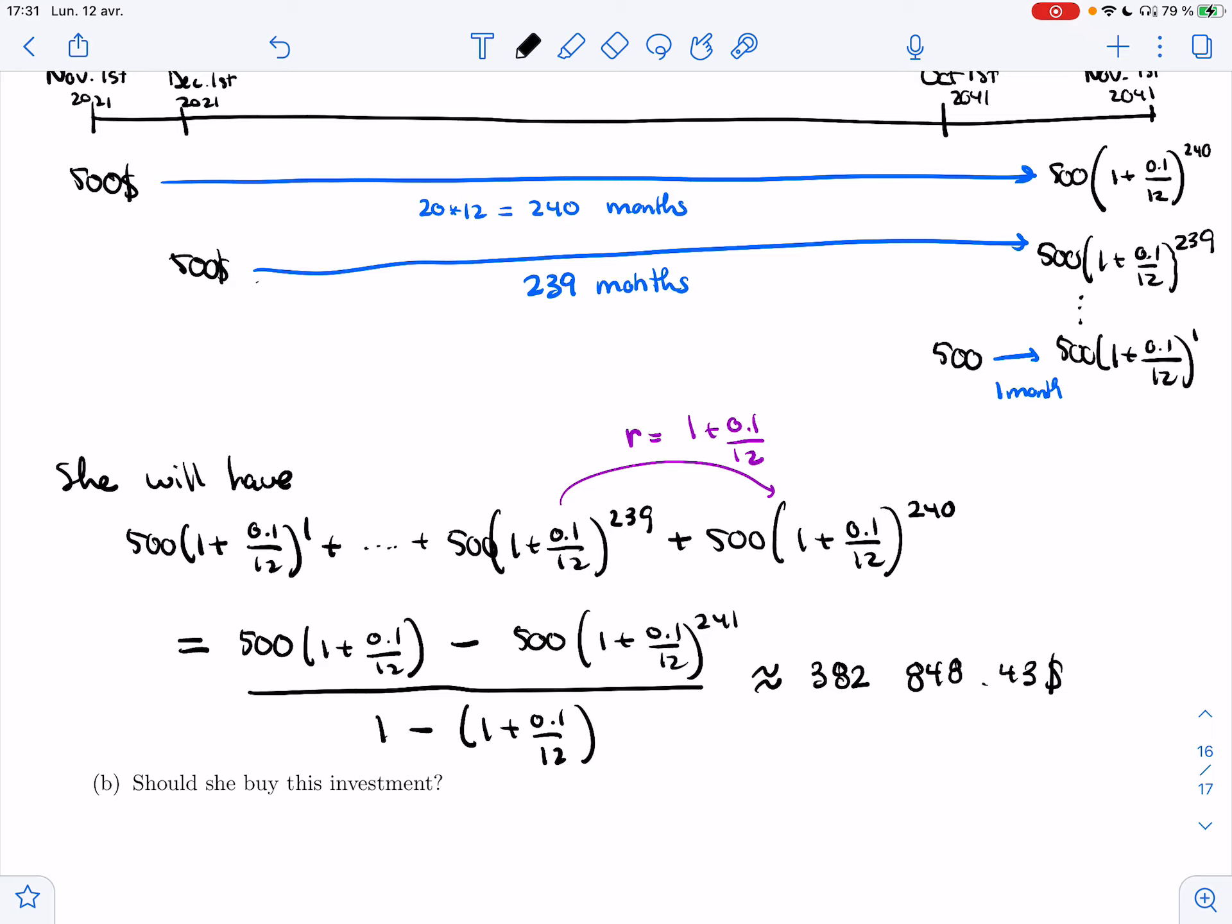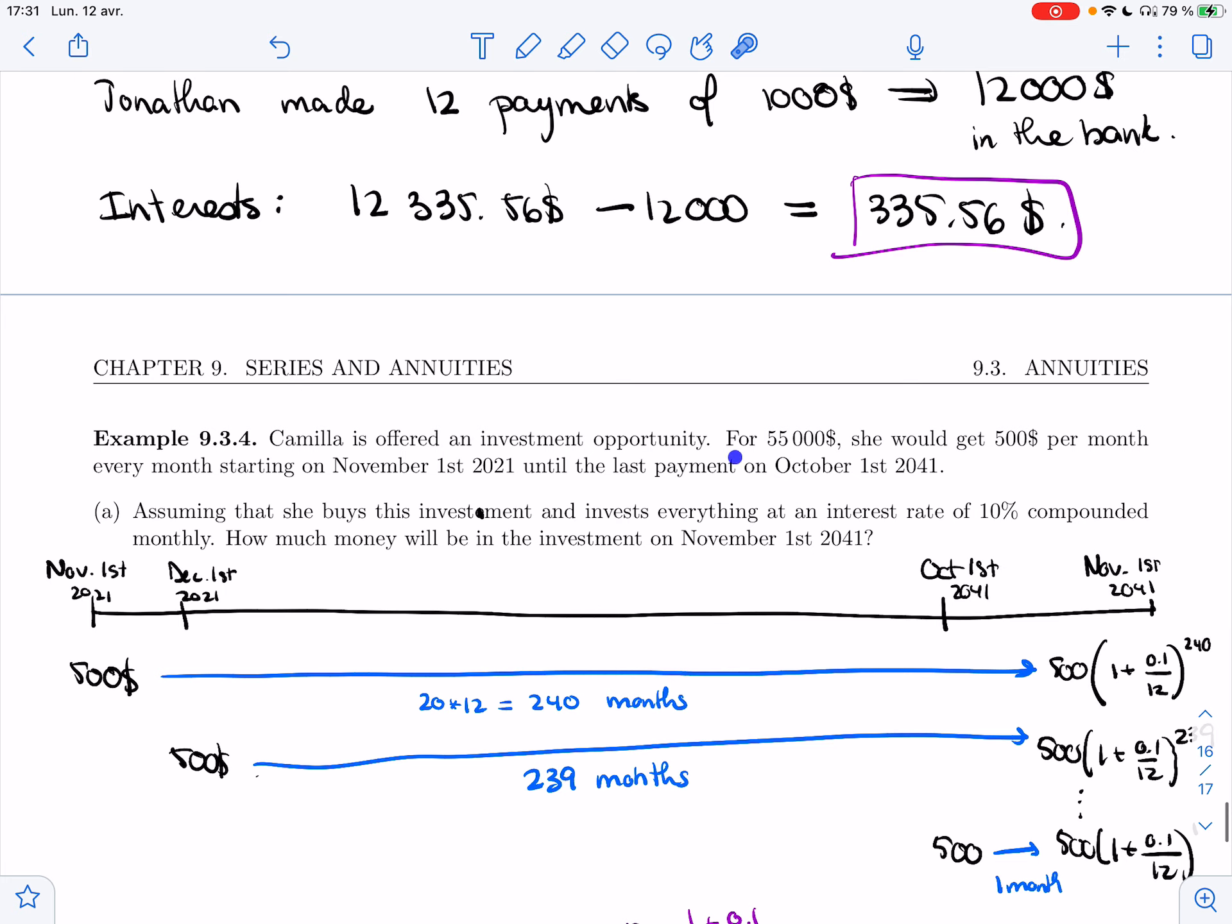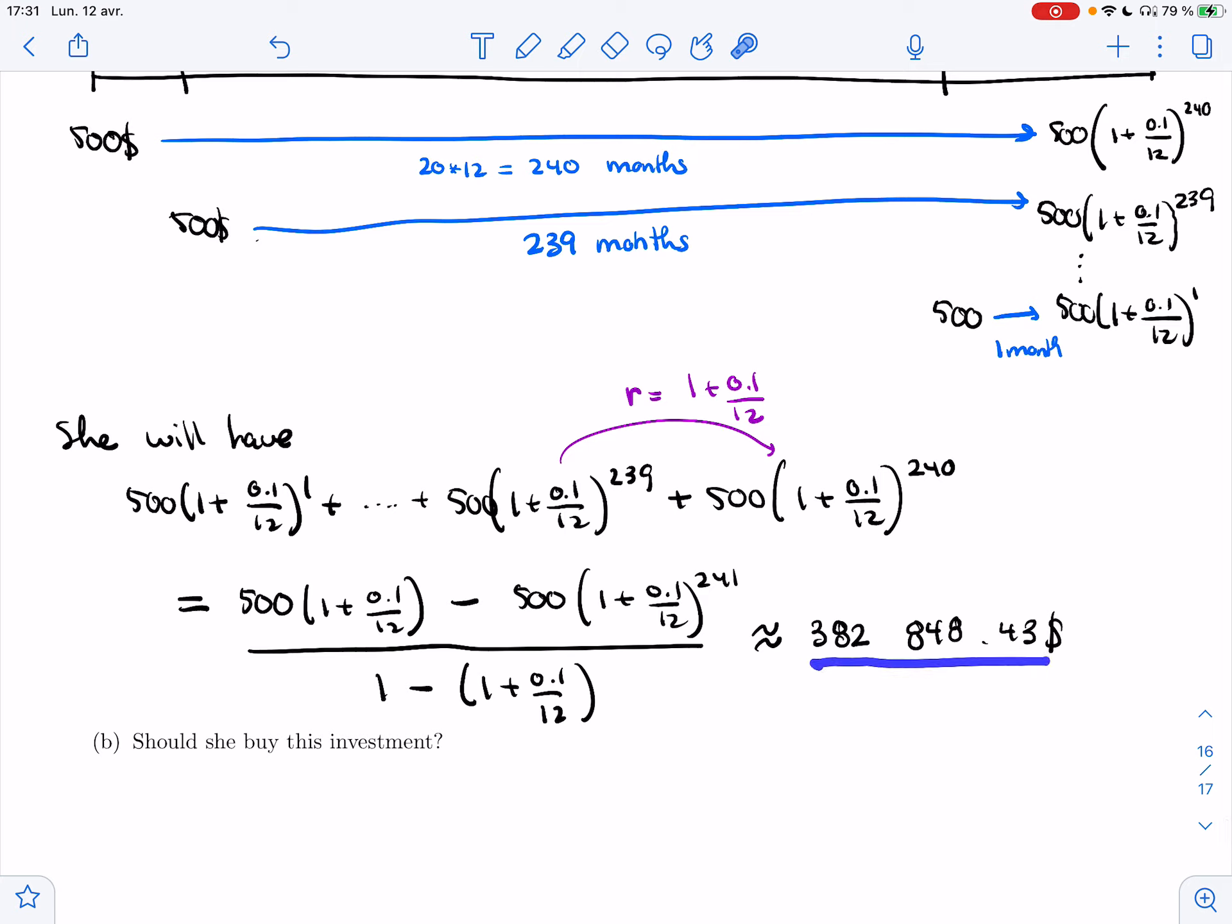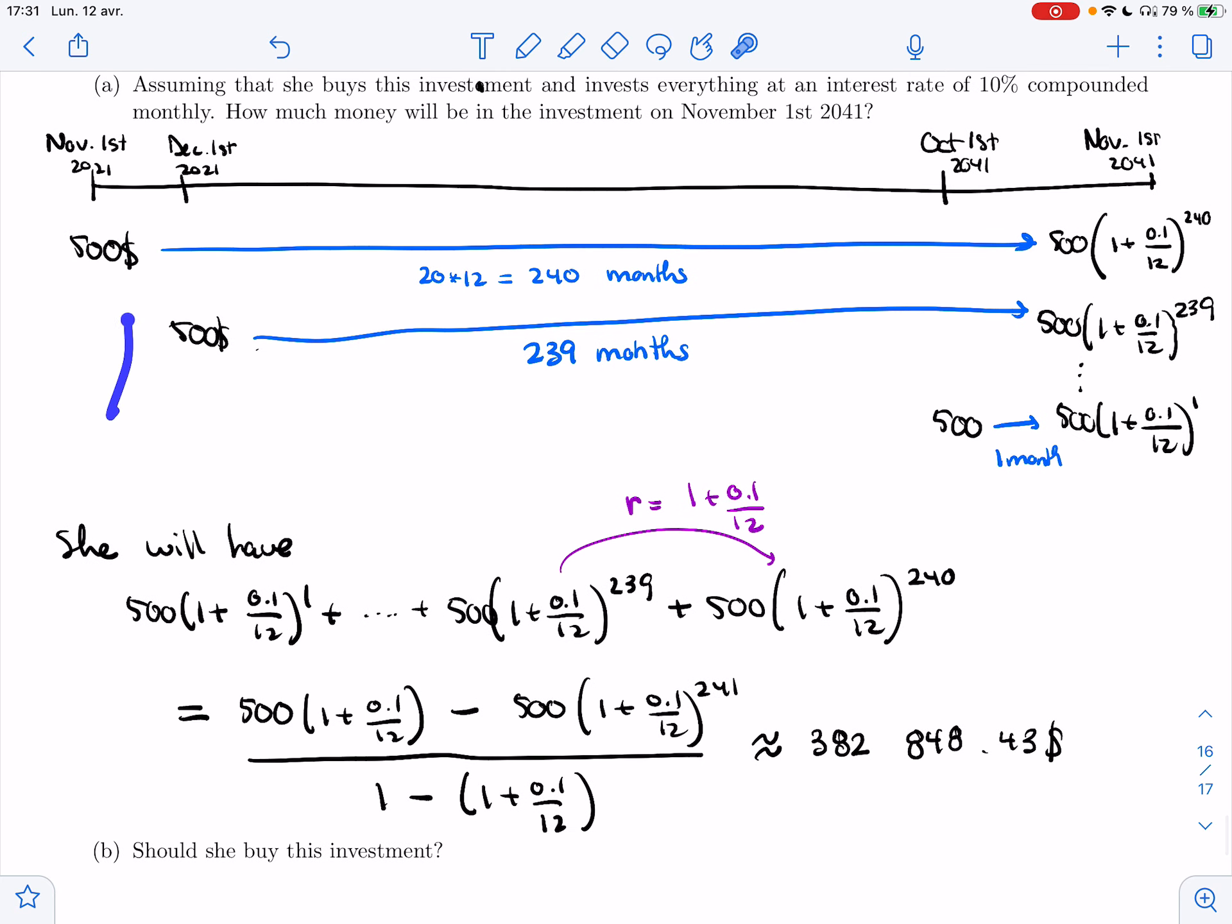So I need to figure out whether she should invest or not. That's the next question. Should she buy this investment? She's asked to pay $55,000 for it. So at first glance, it looks like a good deal because she starts with $55,000 and ends up with $382,000.